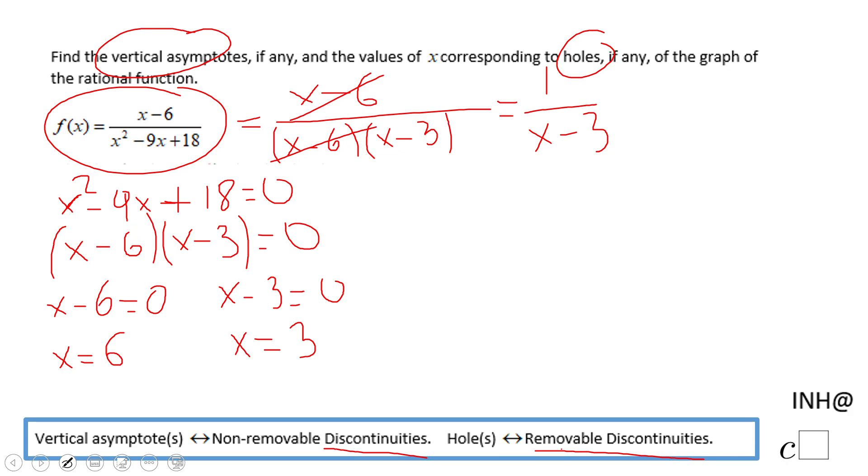So that means, you see here, removed, it's disappeared. This is removable, so this is going to be a hole.